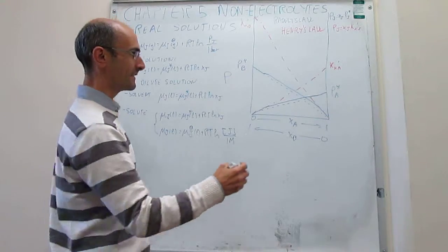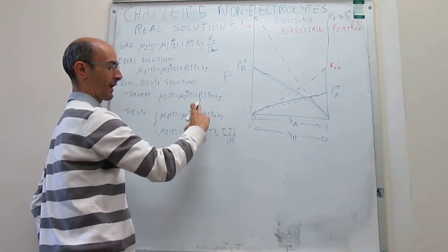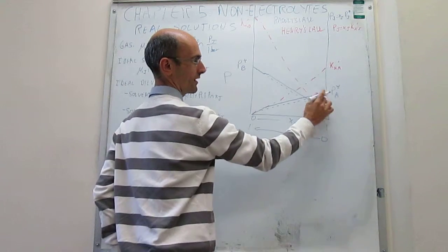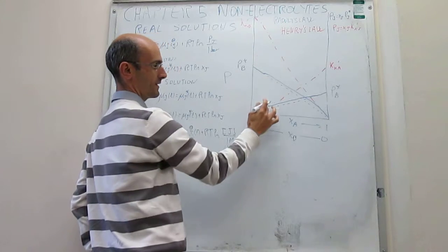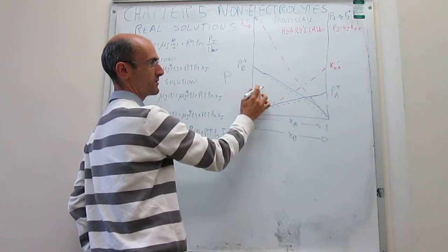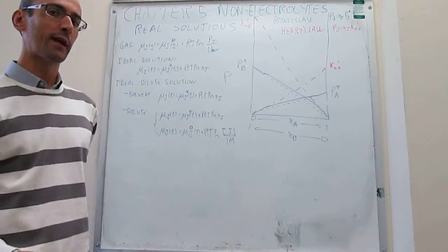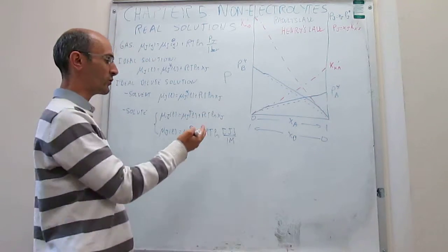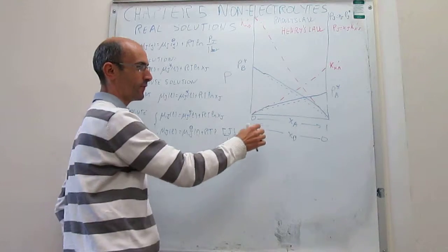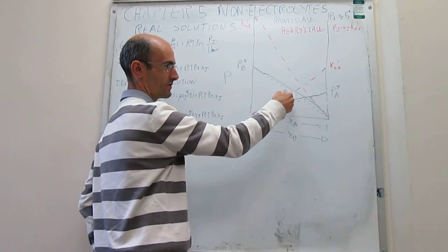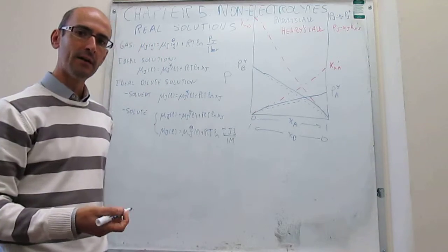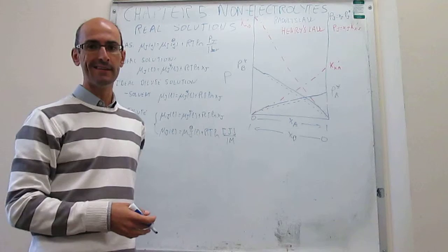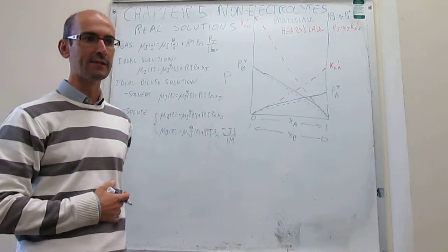In ideal dilute solutions we can write the chemical potentials as we have written here — in this range from here to high concentrations of A, and in this case from here to high concentrations of B. What we don't have yet is an expression for writing the chemical potential when we're not in any of these cases. At a concentration 50-50 of A and B, it turns out that A does not satisfy any of the laws, and neither does B. So the question is, how do we actually handle this?